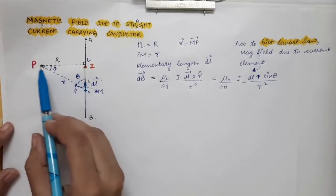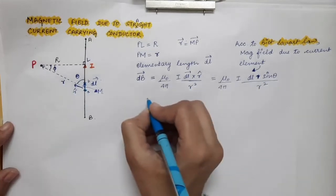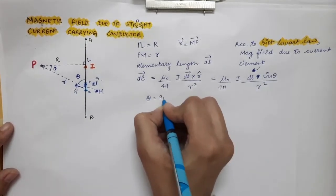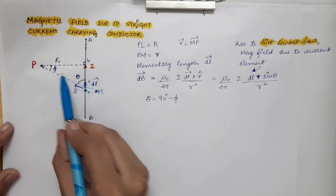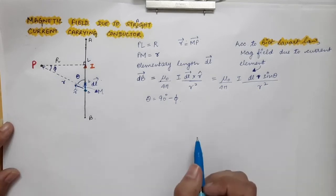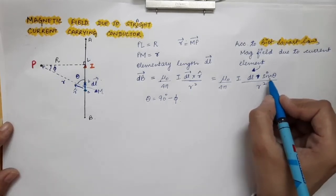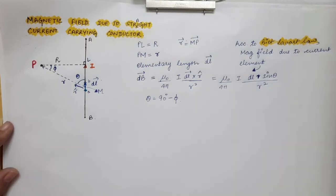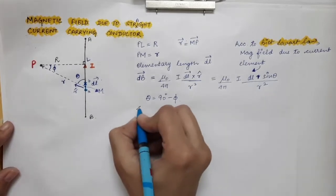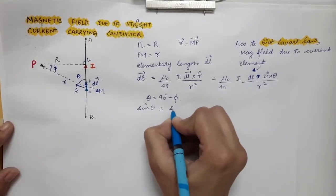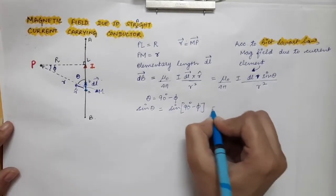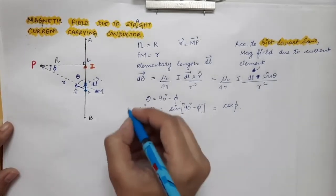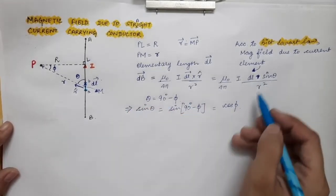How are phi and theta related? This is a right-angle triangle, so theta is equal to 90° minus phi. Over here we have sin theta, so we are converting sin theta in terms of phi. Sin theta = sin(90° − φ), which is nothing but cos φ. So we have found sin theta in terms of phi.